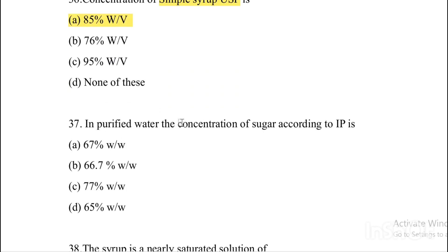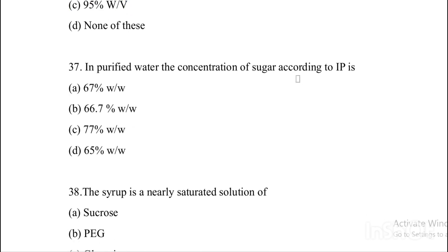Next question. In purified water, concentration of sugar according to IP is — Option A: 67%. Option B: 66.7%. Option C: 77%. Option D: 65%. Answer is Option B, 66.7%.